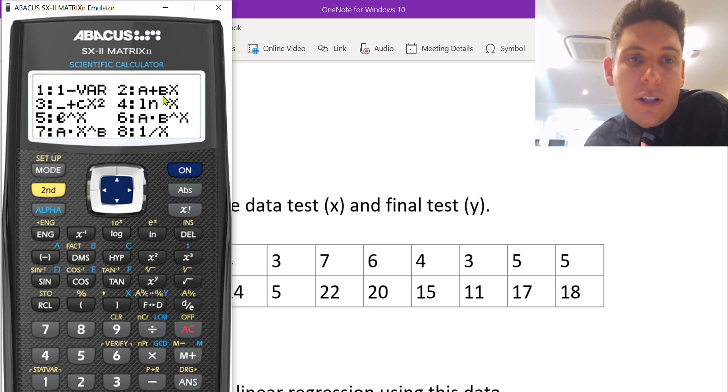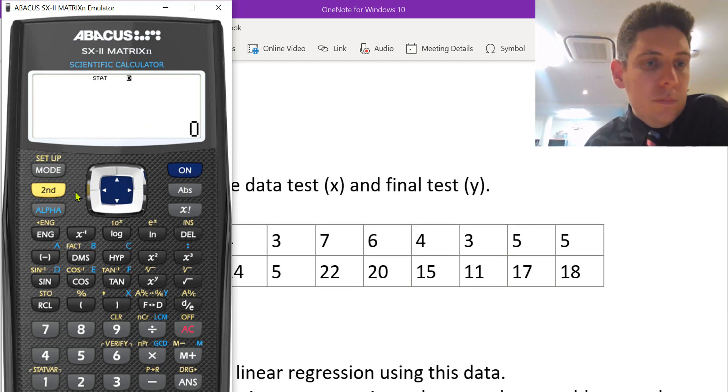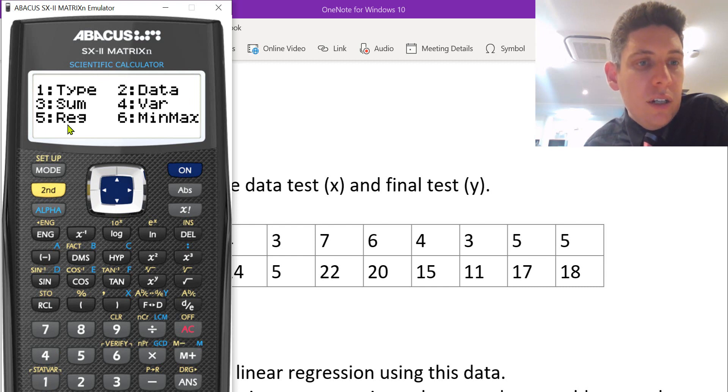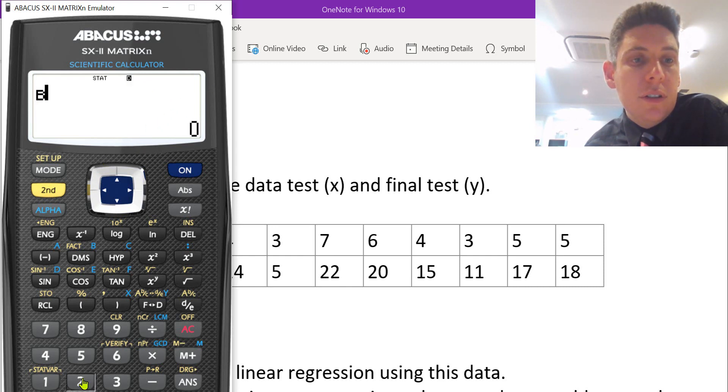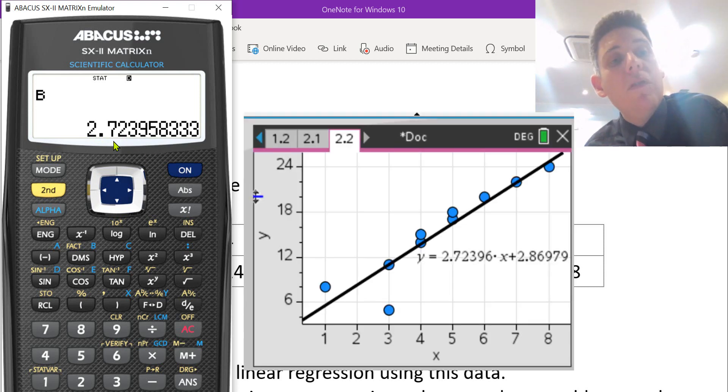So b on this calculator is the gradient of this line, and a is the constant. All right, so if we go to second, press the one, you can see REG for regression. And we need to figure out the b, which is the gradient of that regression line going through the line. And there's our gradient, 2.724. So if you're watching before, for the TI, that's the same gradient as before.